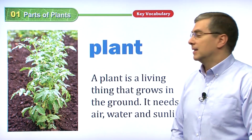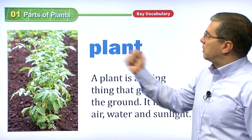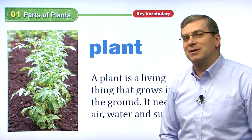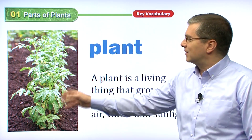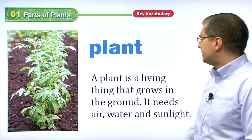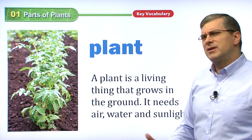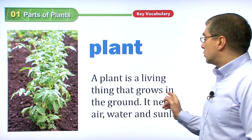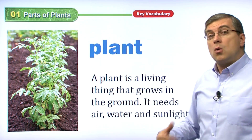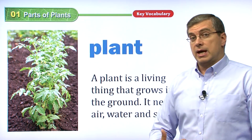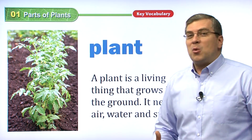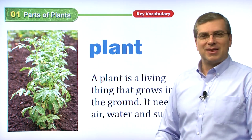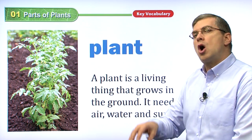Let's get started. Here we have a plant — these are types of plants, perhaps in your garden or your mother's garden. What is a plant exactly? A plant is a living thing that grows in the ground. We are living things too — human beings and animals — but we don't live in the ground. Plants can't move; they are stuck in the ground.